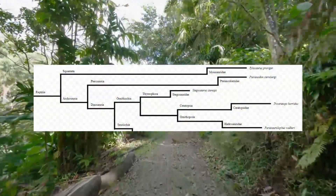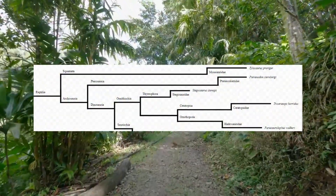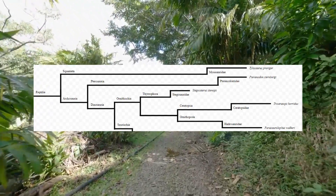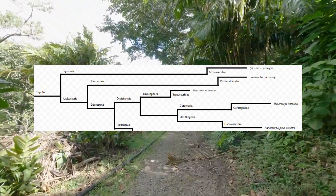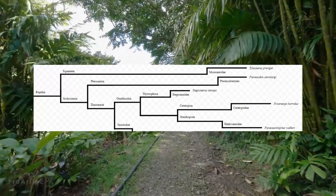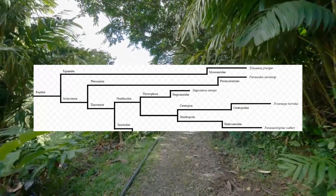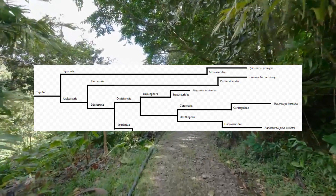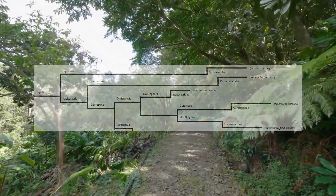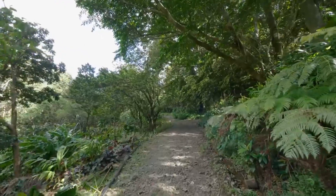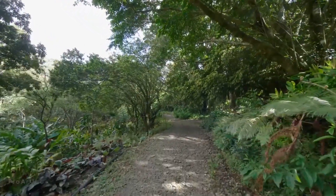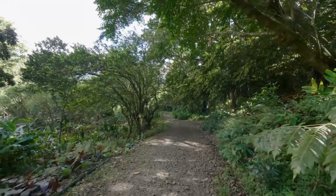Phylogenetic trees are used by biologists to map out the evolution of living organisms. They determine this by comparing and contrasting the DNA of different animals. However, without DNA from extinct species, it's difficult to map out the evolution of prehistoric organisms such as the dinosaurs. Instead, paleontologists study the skeletal structures to predict how closely related two species are based on similar features.